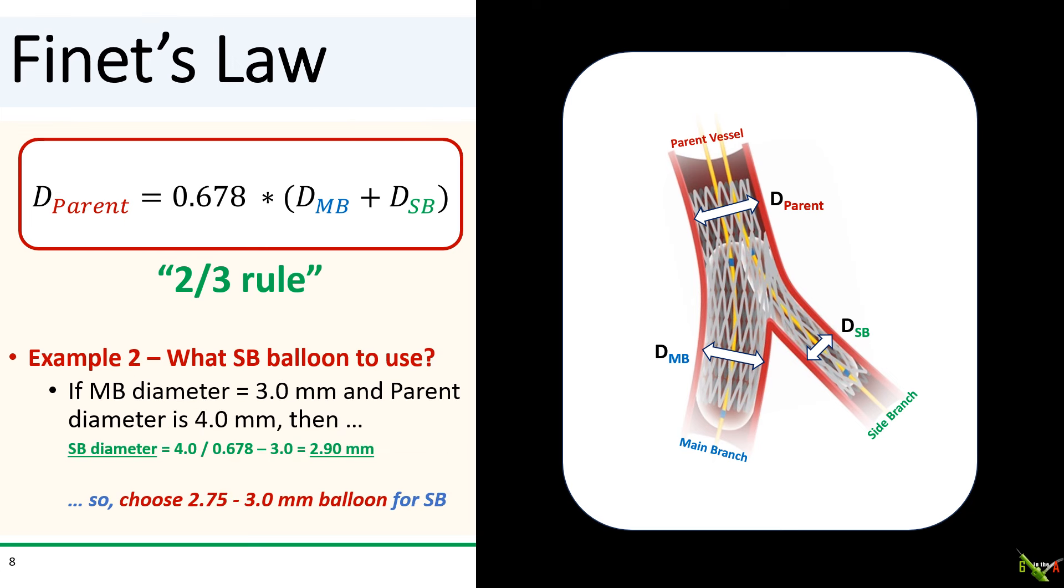And here's another example. Suppose you were trying to decide the size of your side branch kissing balloon, and you've determined, say, by OCT, that the main branch was 3.0 millimeters and the parent vessel was 4.0 millimeters. Well, in this case, Finet's law will tell you that the side branch diameter should be 2.9 millimeters. So that means that you should be choosing either a 2.75 or a 3.0 millimeter balloon for kissing angioplasty in the side branch.